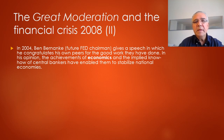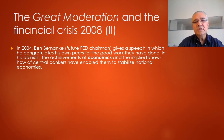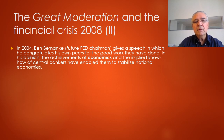In 2004, Ben Bernanke, the future Fed chairman, gives a speech where he congratulates his own generation of economists — and implicitly himself — for the good work they have done. In his opinion, the achievements of economic science are that the know-how of central bankers has allowed them to diminish the impact of fluctuations on the economy and stabilize national economies.